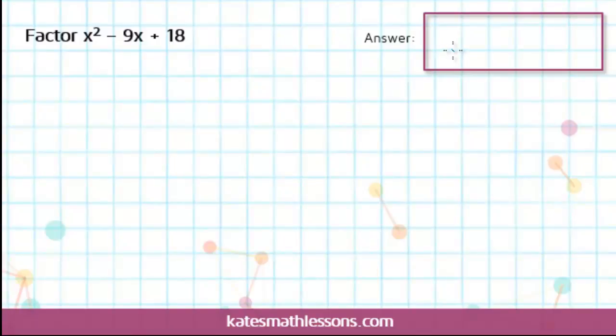Here we've been given a quadratic expression that we need to factor. Factoring is basically like doing FOIL backwards, so we need to figure out what we could put in these two sets of parentheses, so that when we distribute and simplify it out using FOIL, we end up with this expression here, x squared minus 9x plus 18.